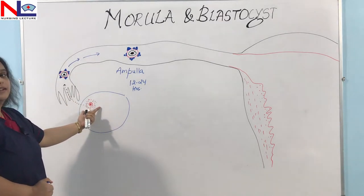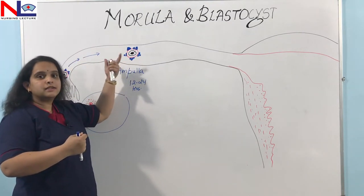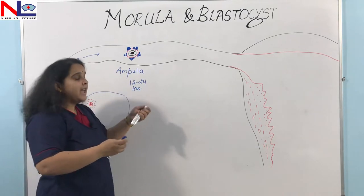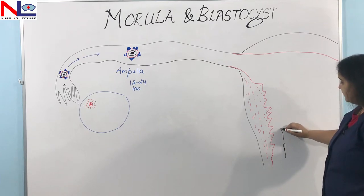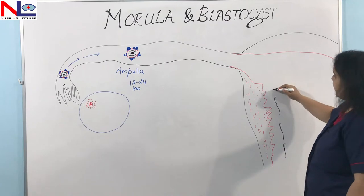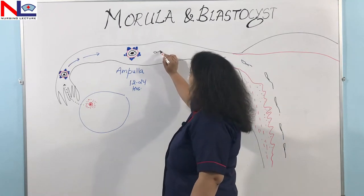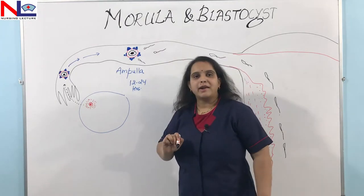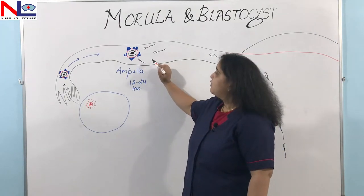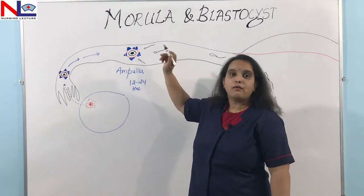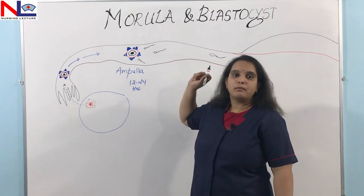On the day of ovulation, this Graafian follicle releases one secondary oocyte into the fallopian tube, and this secondary oocyte is waiting for about 12 to 24 hours. If at that time ejaculation happens and sperm cells are released, they travel from the vagina through the uterus and reach near the secondary oocyte. The important step that takes place here is fertilization.